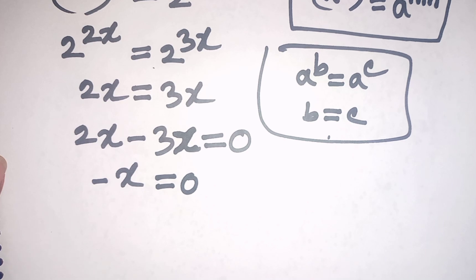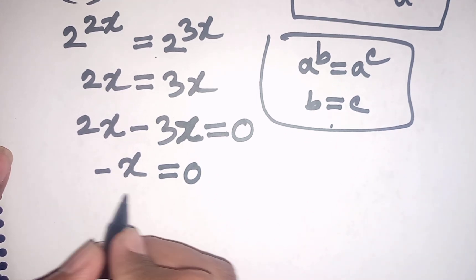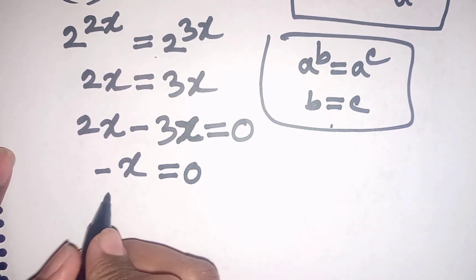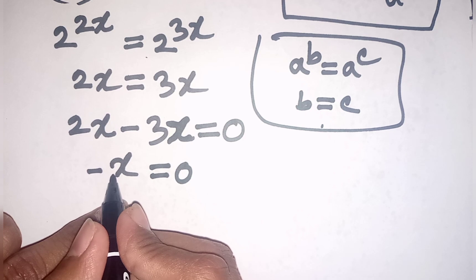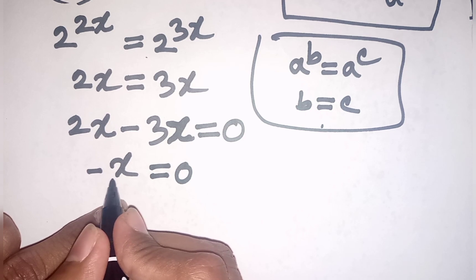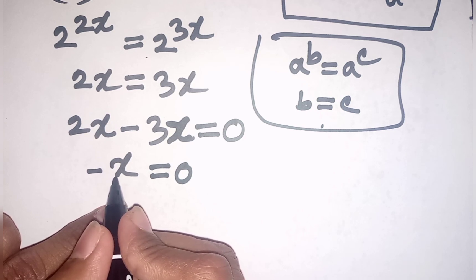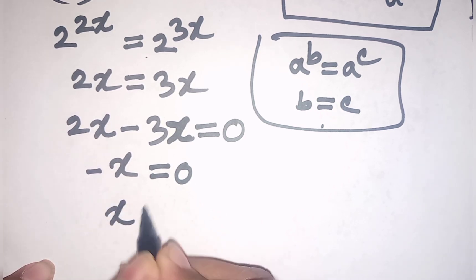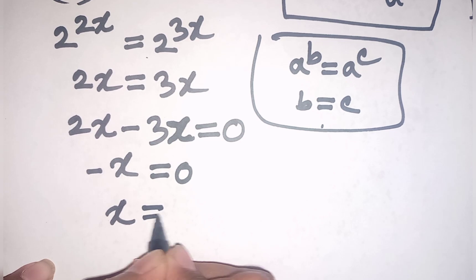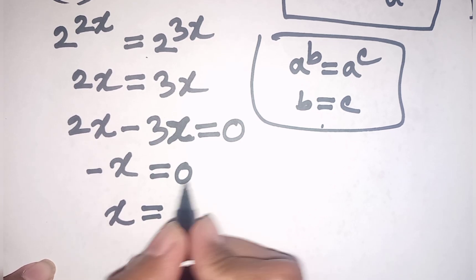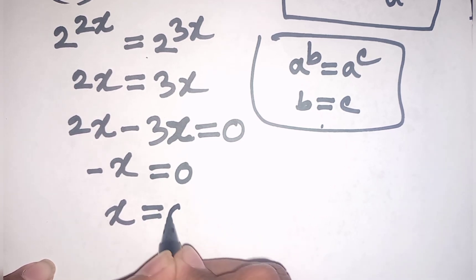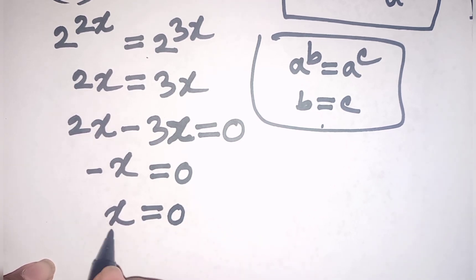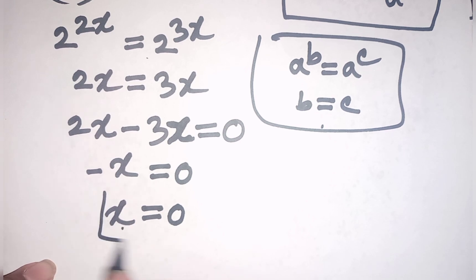Now we multiply both sides by minus 1: minus x times minus 1 gives plus x, and 0 times minus 1 is still 0. So x is equal to 0. This is the value of x.